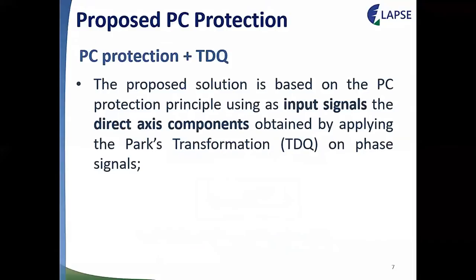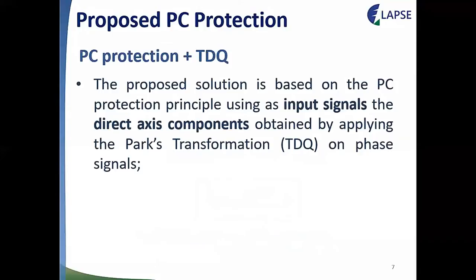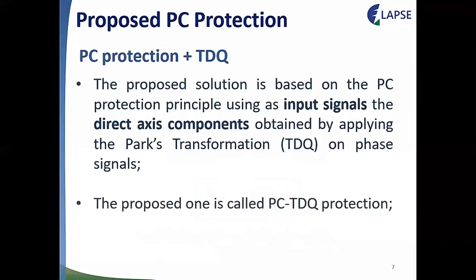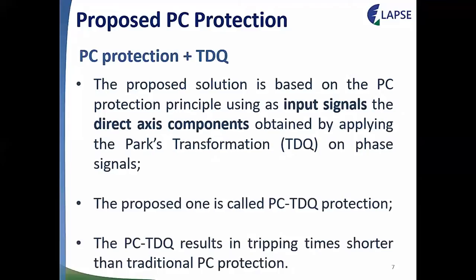Regarding the proposed PC protection: the proposed solution is based on PC protection principles using as input signals the direct-axis components obtained by applying the Park's transformation, the TDQ, to the phase signals. The proposed method is called PC-TDQ protection and results in tripping times shorter than traditional PC protection.